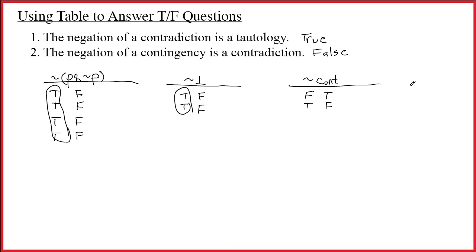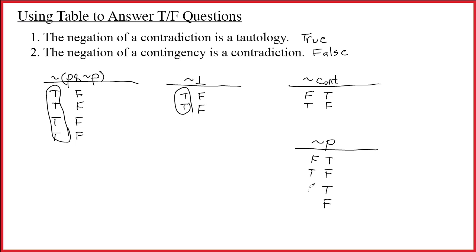The details aren't absolutely essential. You could designate a single letter to be a contingency and write underneath it some combination of T's and F's. You could use two rows or four rows. If I negate a contingency that's TFTF, it becomes FTFT. So the negation of a contingency is another contingency.